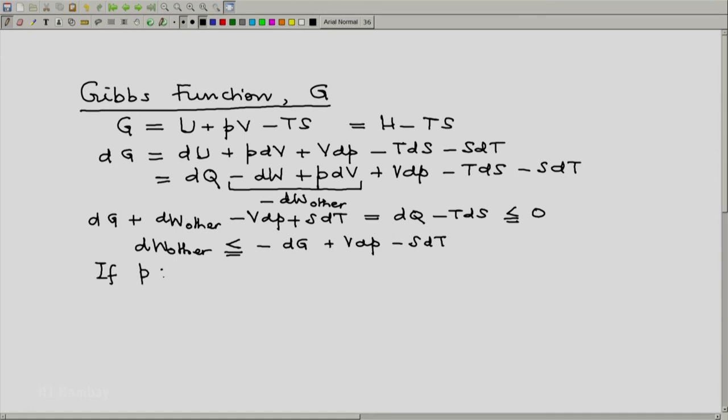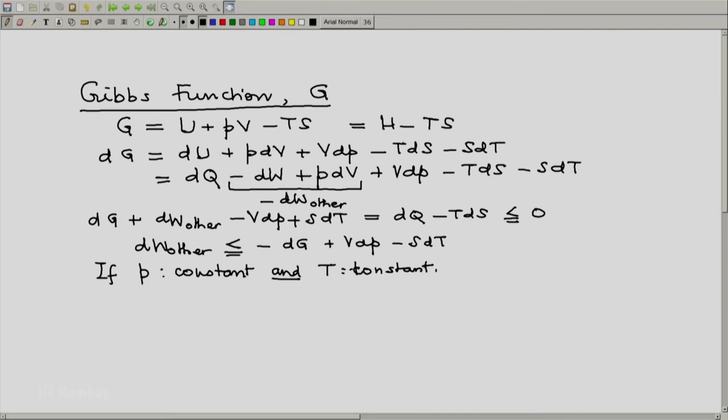Now consider a process which is at constant pressure and constant temperature. A very simple situation where this occurs is with change of phase. And if you consider more complex systems, chemically reacting systems, then such processes occur quite often in chemical reactions and electrochemical reactions. So under constraints of constant pressure and constant temperature, we end up with dW other under conditions of constant pressure and constant temperature will be less than or equal to minus dG under the same conditions.